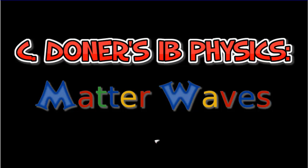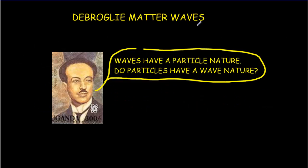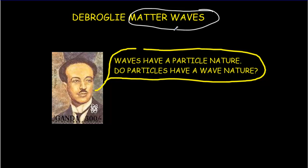Let's take a look at de Broglie matter waves. Back in 1924, Prince Louis de Broglie predicted the existence of matter waves. His reasoning must have been along the lines of: we usually think of electromagnetic waves as waves, but they have a particle nature. And that's where we talk about wave-particle duality.